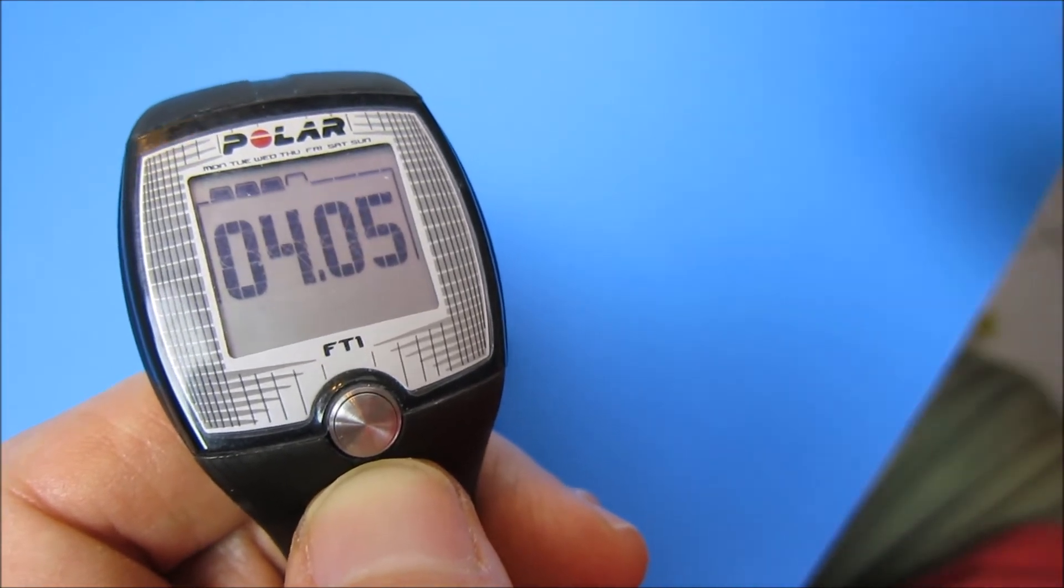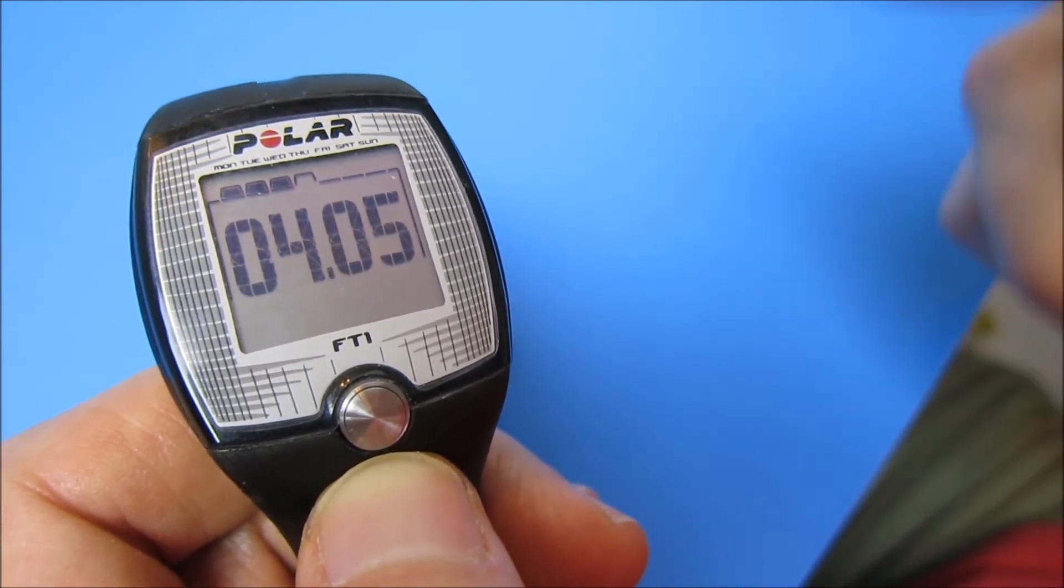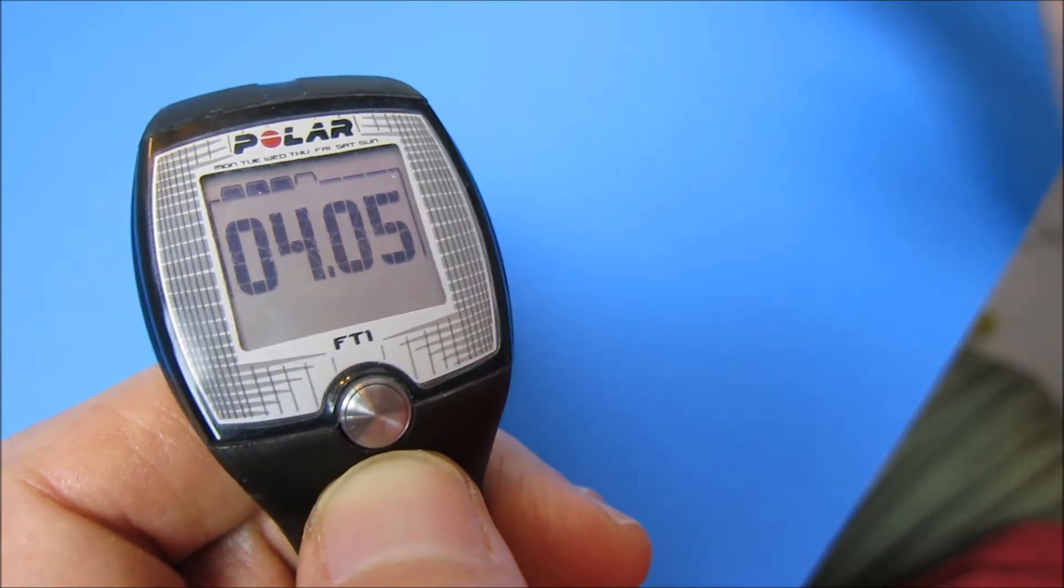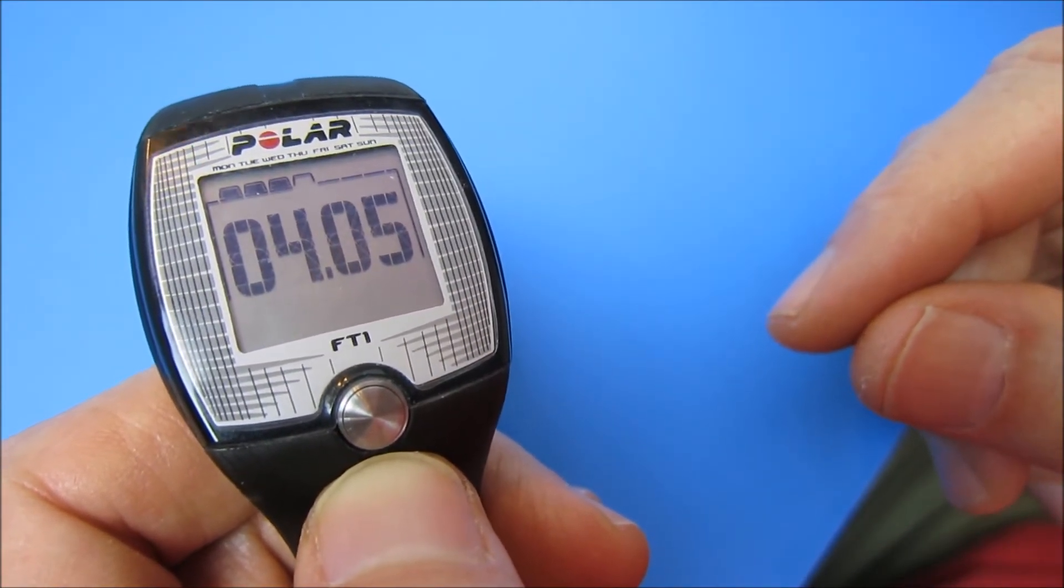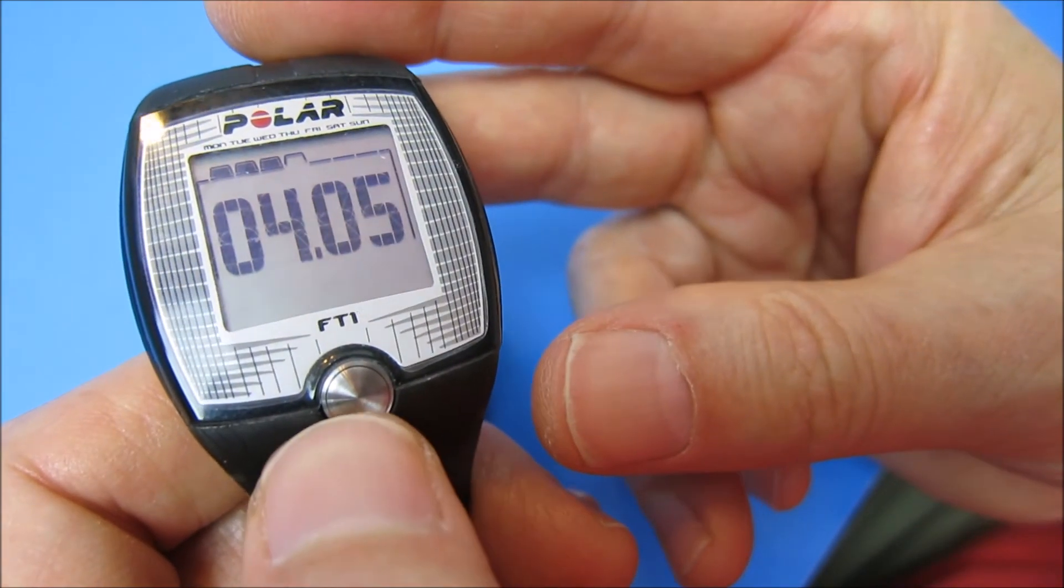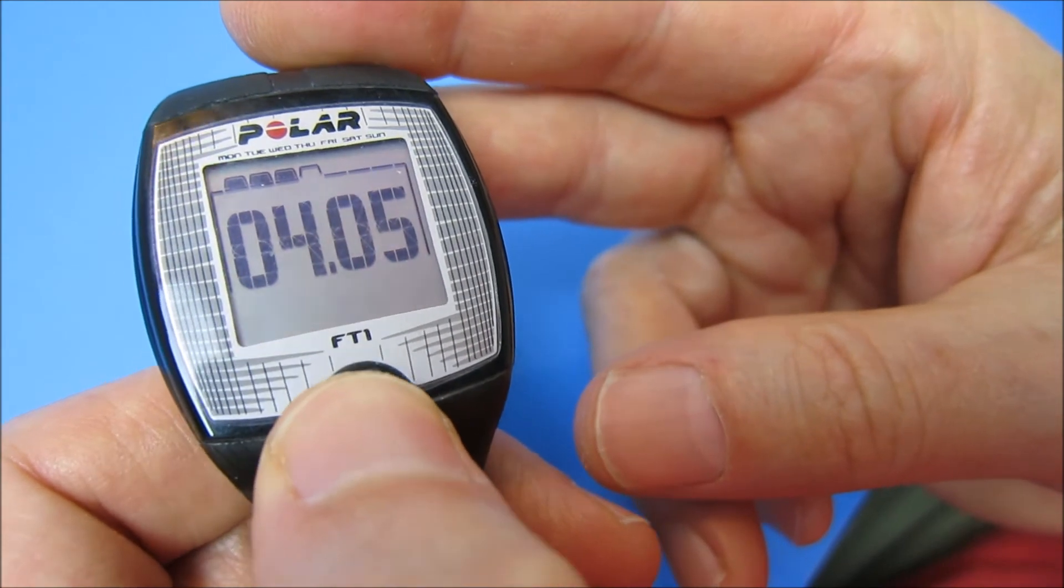So let's say you have AFib or something, you could see what your high rate or your low rate was during the night. And it'll have an alarm too, it'll go off if you want to get to your maximum or minimum.